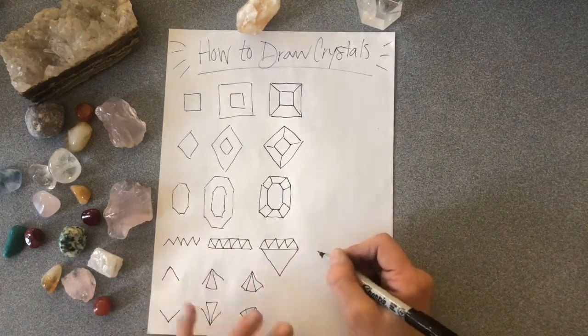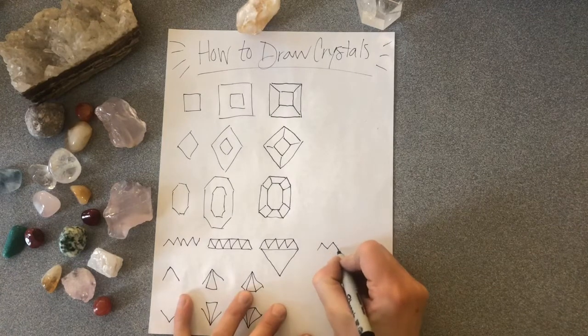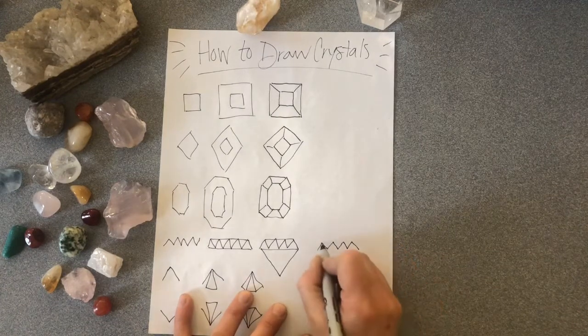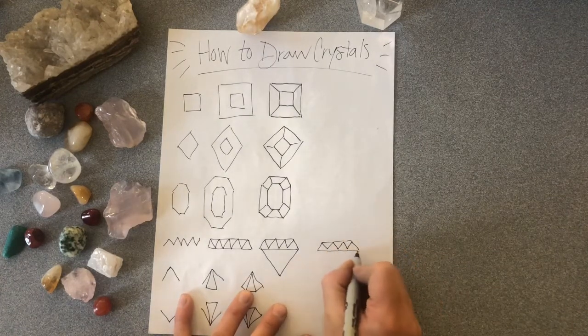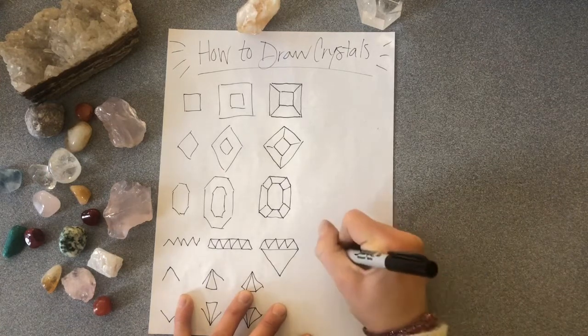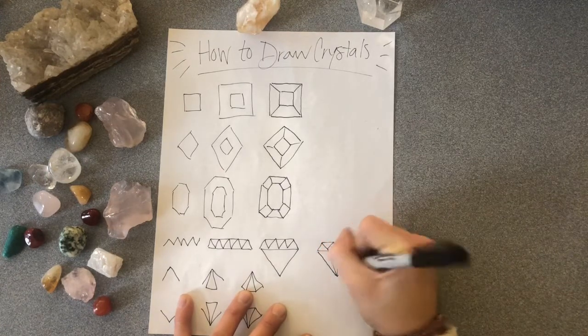For our diamond, we're going to start with a zigzag. Connect the top, connect the bottom, make a V to each corner, and then make two lines inside.